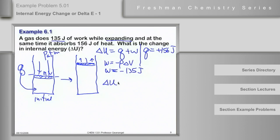So, delta U is equal to Q, 156, minus 135 W, both in joules, and that gave me plus 21 joules. Plus 21 joules.